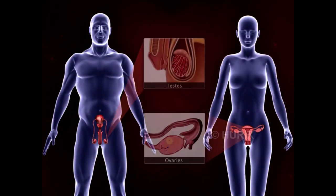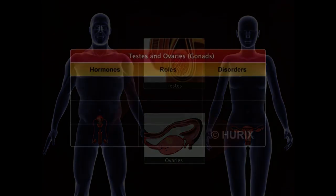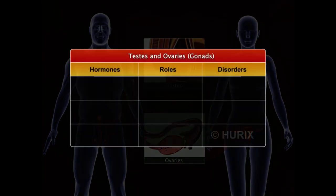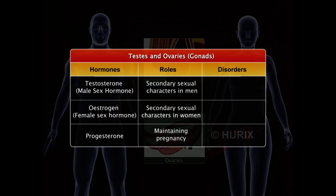The testes and ovaries, like the pancreas, have a dual function. Apart from the production of gametes, they also secrete sex hormones that control secondary sexual characters.